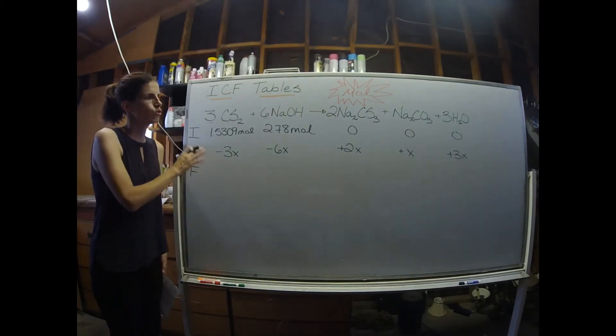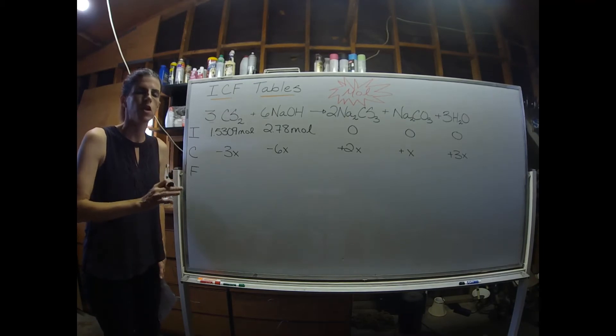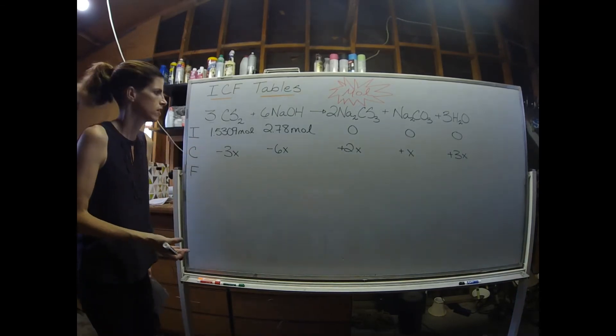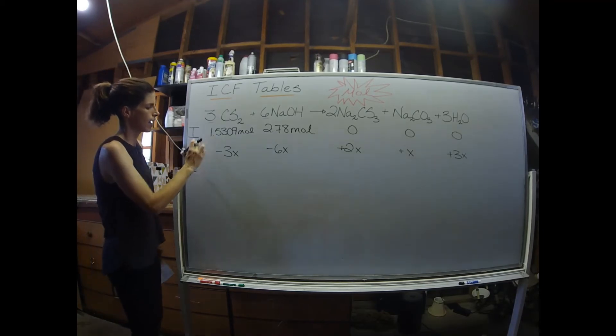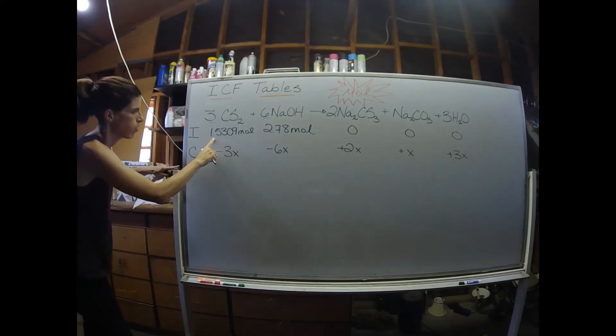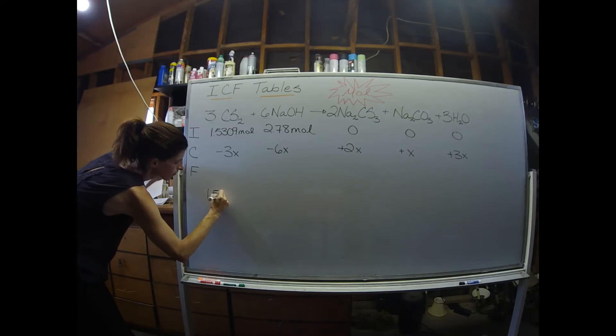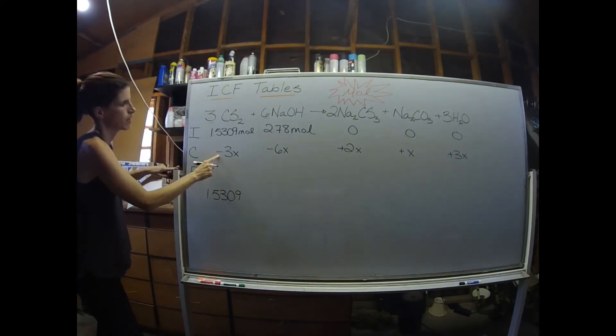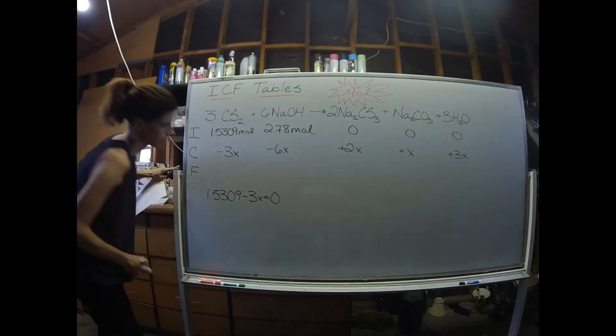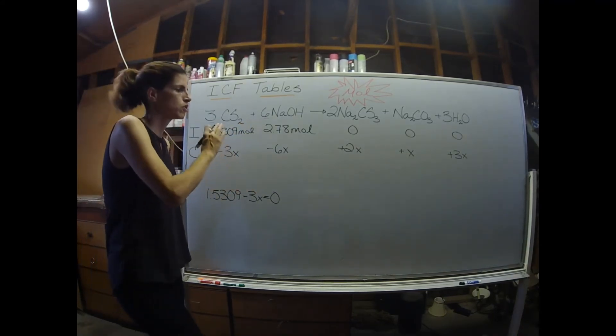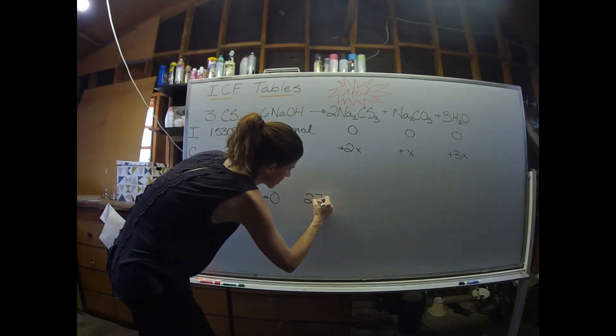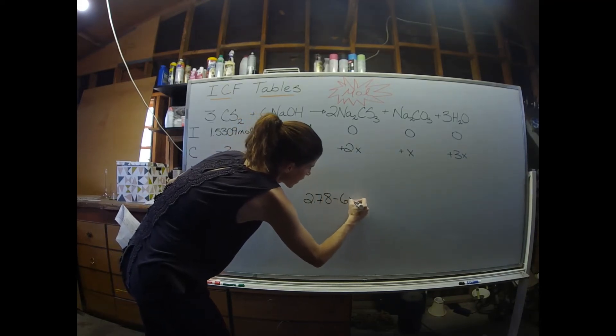Now that we've gotten the first two lines of the ICE table filled out, our next task is to figure out which of the reagents is the limiting reactant. The way you do that is by combining the I and the C lines and setting them equal to zero. Let me show you what I mean. I'm going to grab the 1.5309 value, I'm going to subtract 3x and set that equal to zero. We're going to do the same thing with the other reagent. If there was three reagents, you would do it for all three reagents. So 2.78 minus 6x equals zero.